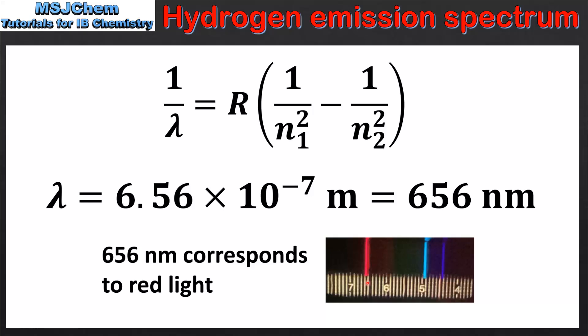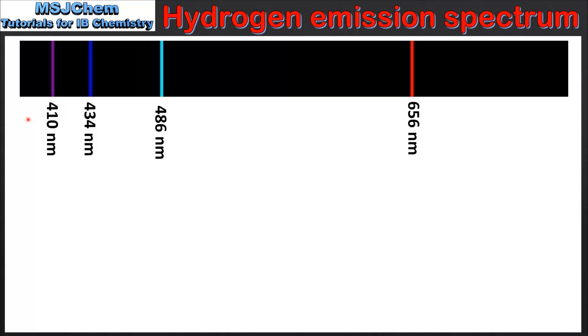Next we look at the electron transitions responsible for the remaining wavelengths. Here we can see the 4 spectral lines together with their wavelengths.